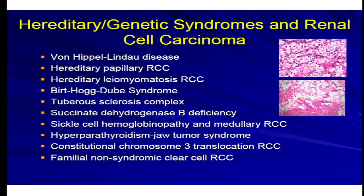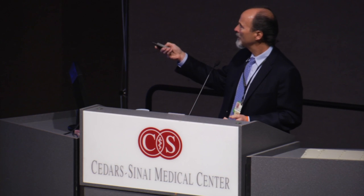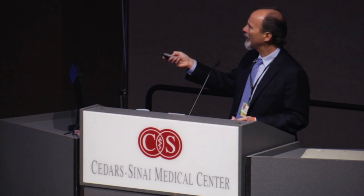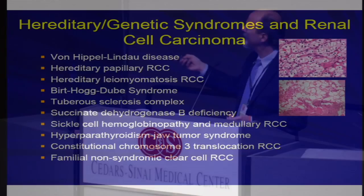I was asked to say a couple words about hereditary genetic syndromes associated with renal cell carcinomas. There are well-known, well-defined genetic or familial syndromes associated with increased risk of developing different types of neoplasms including renal cell carcinomas — notably Von Hippel-Lindau, tuberous sclerosis, Birt-Hogg-Dubé, and these sorts of things.